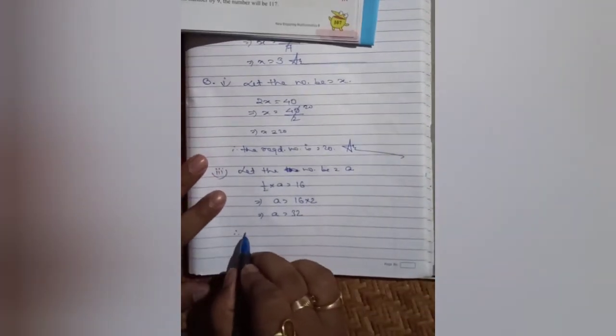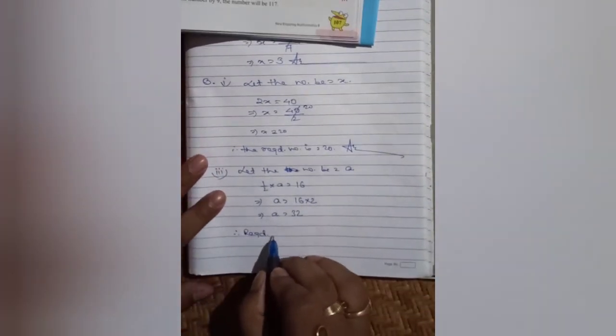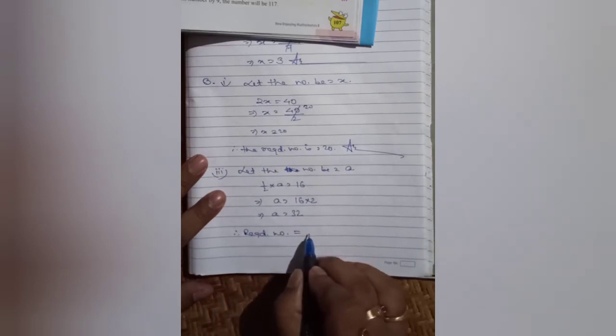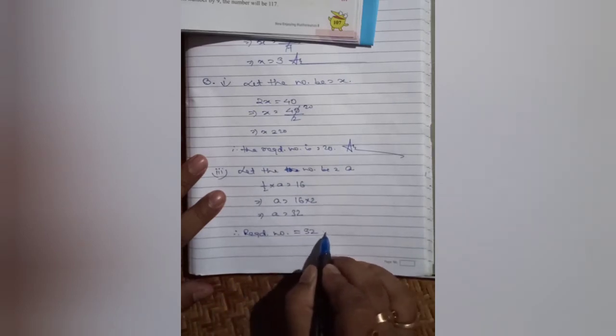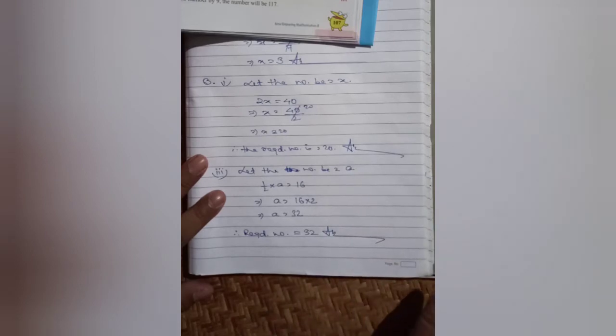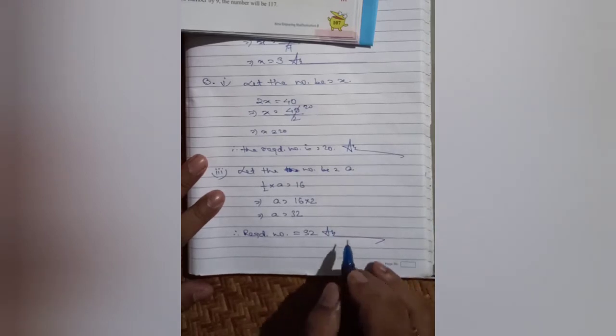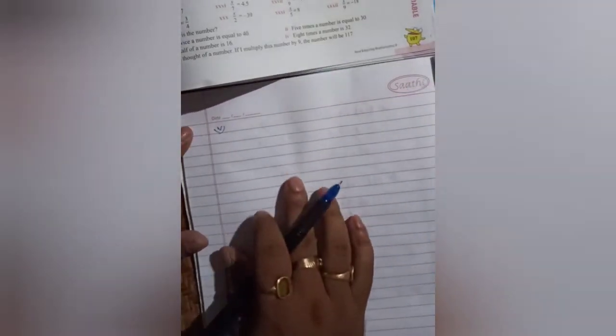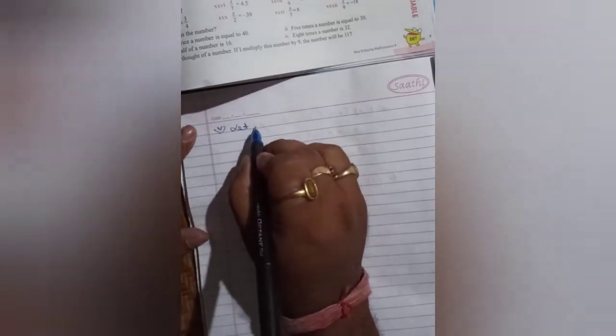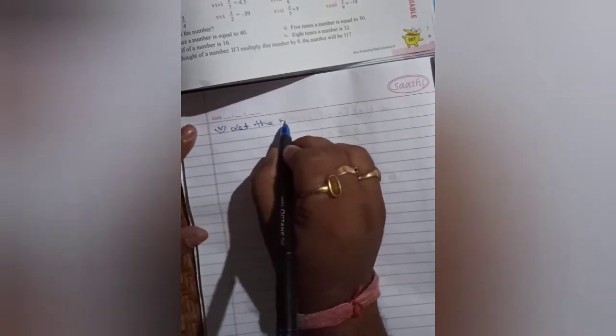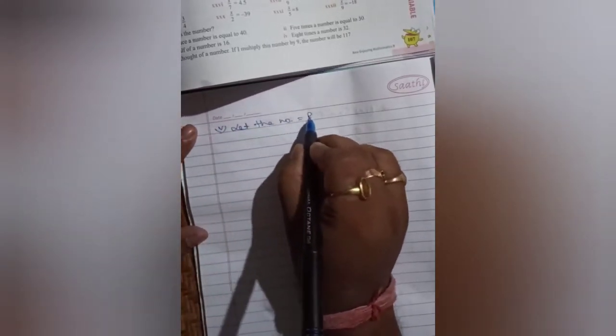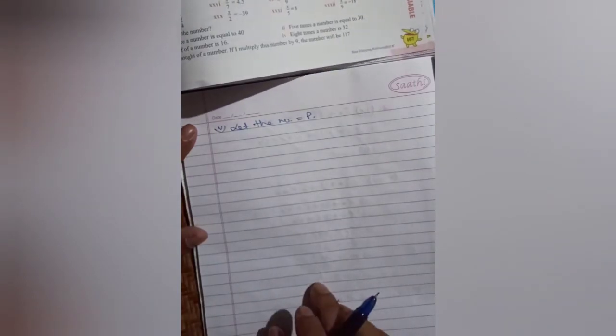Therefore, required number equals 32. Now number five: I thought of a number. Let the number equal to p. If I multiply this number by 9,